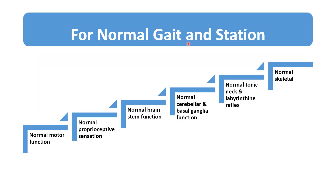Gait is the way a patient walks, and station is the way a patient stands and maintains posture. For normal gait and station, there should be normal motor function, proprioceptive sensation, brain stem function, cerebellar and basal ganglia function, tonic neck and labyrinth reflexes, vestibular function, and a normal skeletal system.